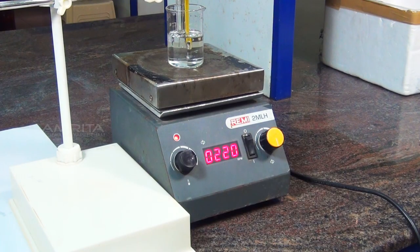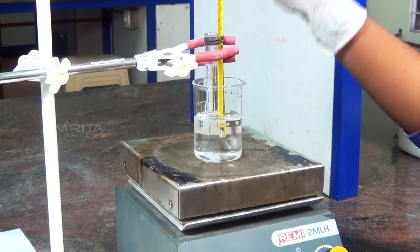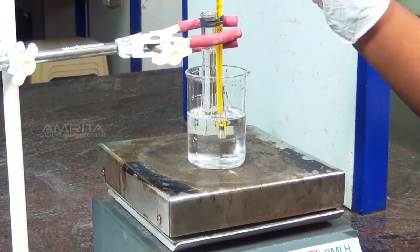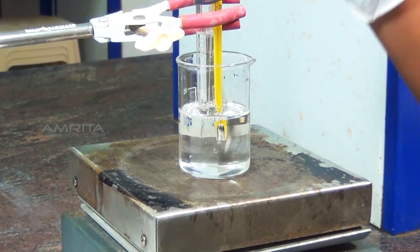Start heating the liquid paraffin bath slowly and stir the bath gently using the stirrer to ensure uniform heating.